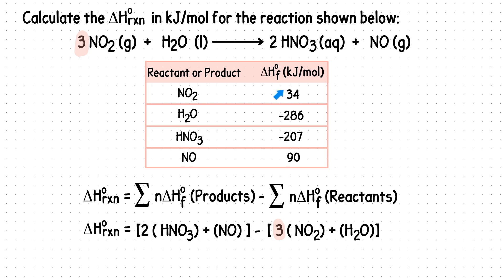Using our standard enthalpy of formation table, we can plug in the values. I'll replace nitric acid with a negative 207, and NO with 90. Replace NO2 with 34, and water with a negative 286.